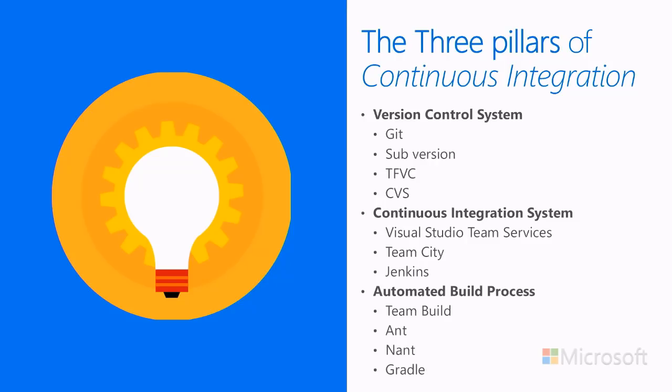The three pillars of continuous integration are version control, our continuous integration system, and our automated build process. Version control systems are broadly divided into two categories: centralized and decentralized. We'll talk about those in detail in the next video. But what's important to establish now is that you need at least a version control system set up — there is no CI without a version control system.